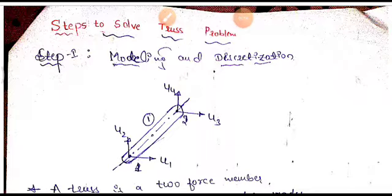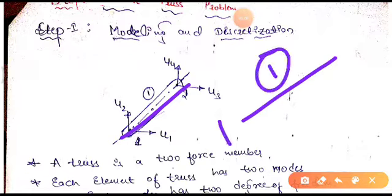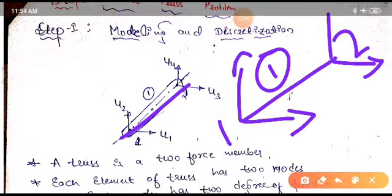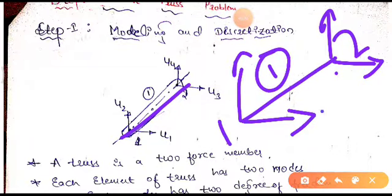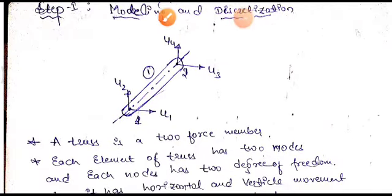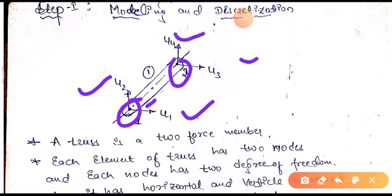This is our truss element. It has two nodes, node 1 and node 2, and each node has two displacements in the x and y direction, given by u1, u2 at the first node and u3, u4 at the second node. This is how we do the modeling.